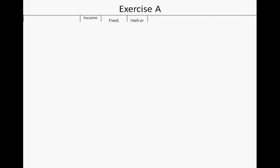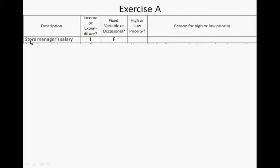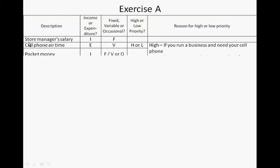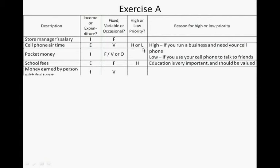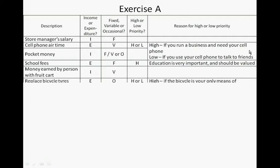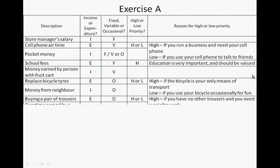Exercise A: the table has an income and expenditure list with descriptions. The first one — the store manager's salary — is an income and it is fixed. Cell phone airtime is an expense; it is variable. It can be high or low priority: high priority if you run a business and need your cell phone, low priority if you only use it to talk to friends.